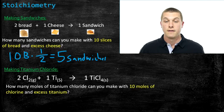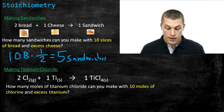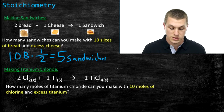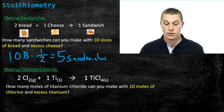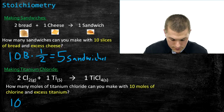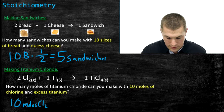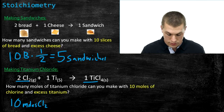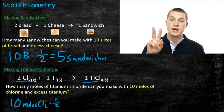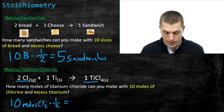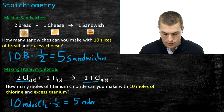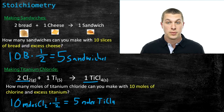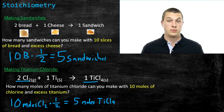Ten slices of bread makes five sandwiches because it takes two slices each time. That's easy, but notice it's exactly the same as the chemical equation below: how many moles of titanium chloride can you make with 10 moles of chlorine? Starting with 10 moles of chlorine, I look at my recipe — I need two moles of chlorine for every one mole of titanium chloride — so I divide by two, and I can make five moles of titanium chloride. These are basic stoichiometry problems.